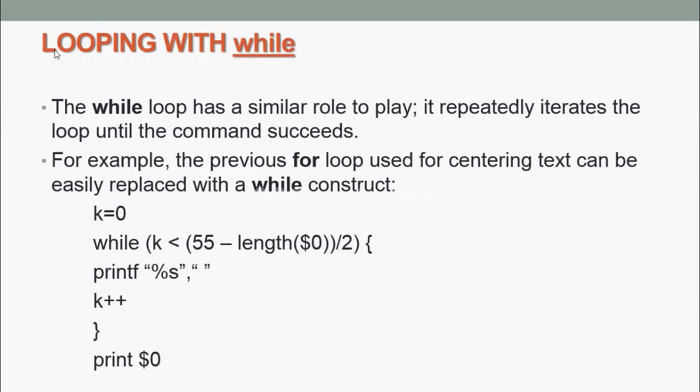Looping with while: The while loop has a similar role to play; it repeatedly iterates the loop until the command succeeds. For example, the previous for loop used for centering text can be easily replaced with a while construct. Let us initialize the value of k to 0. While k < (55 - length($0))/2, if true, it will print. Then it will increment the value of k. Otherwise, it will come out of the loop and print $0.